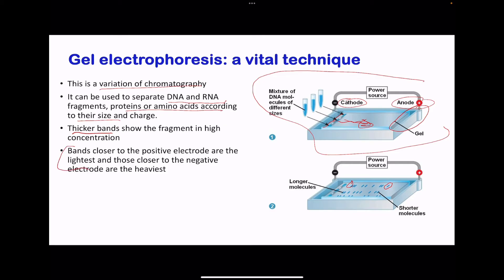Bands closer to the negative electrode show the heavier DNA, and those closer to the positive electrode show the lightest DNA. We compare different samples — maybe one sample is from one organism and another from a different organism. If the bands show up at the same distance from the point where the DNA was loaded into the wells, we can say there are similarities between the organisms.